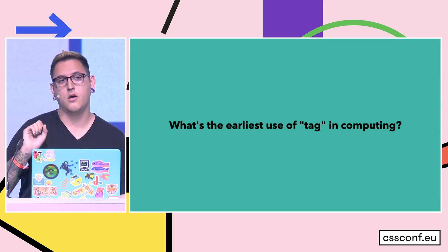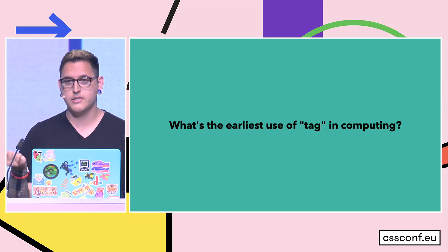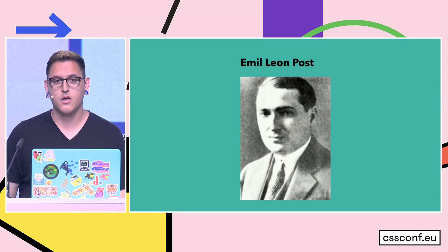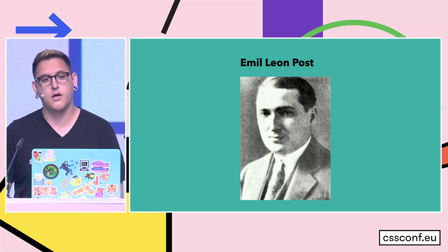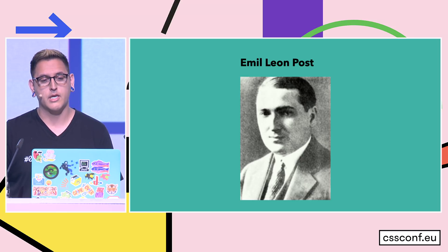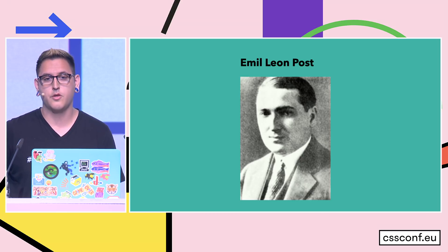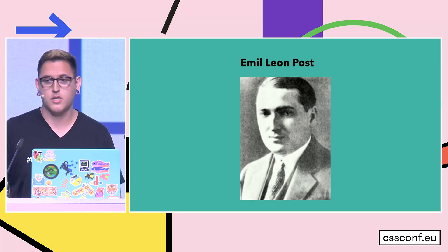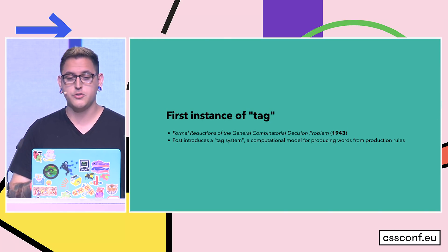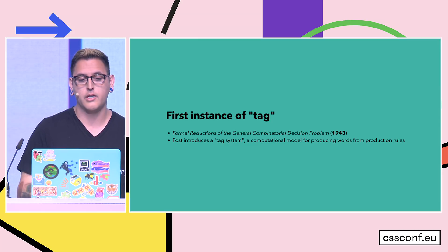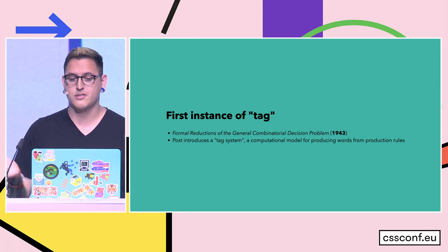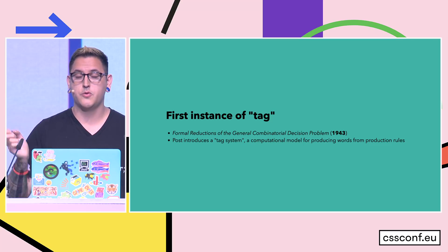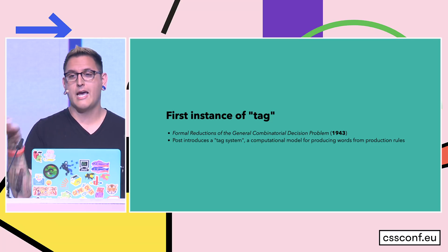In trying to research this question, the earliest instance I can find is credited to Emil Leon Post. Post was a computer scientist and mathematician who made fundamental inroads in theoretical computer science. He was a contemporary of Alan Turing's and was a logician and mathematician. He introduced the idea of a tag system in a paper in 1943 called 'Formal Reductions of the General Combinatorial Decision Problem.' While we won't go through the whole paper, it's useful to understand what it's doing in order to understand why the word 'tag' is appropriate here.